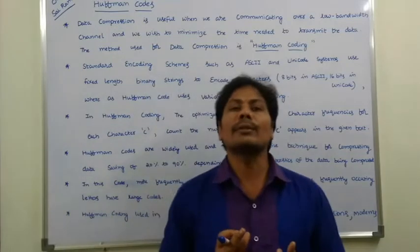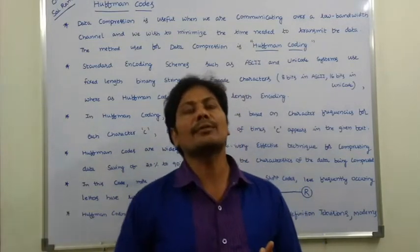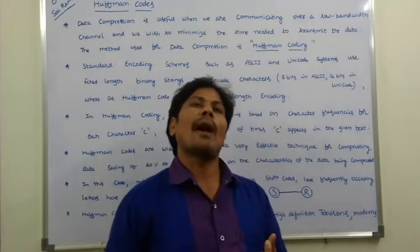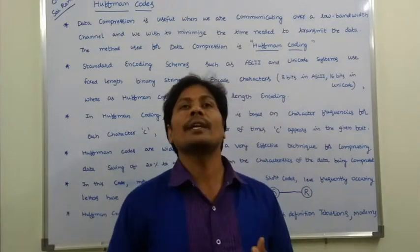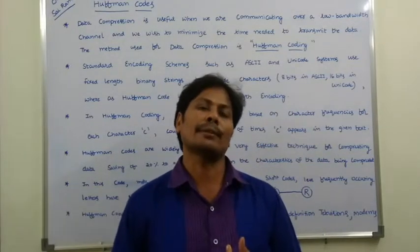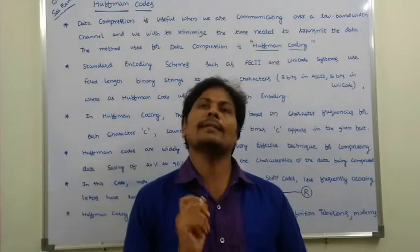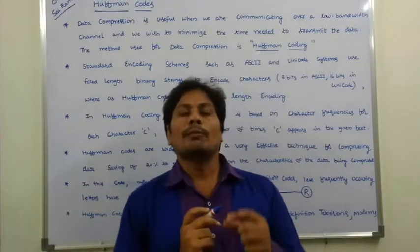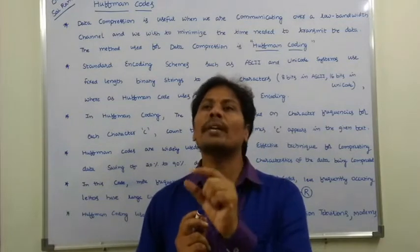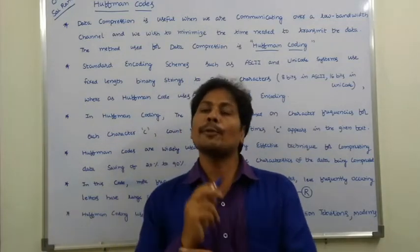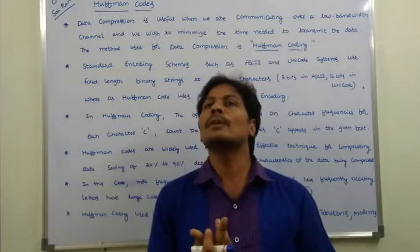Standard encoding schemes include ASCII coding and Unicode. These are fixed-length schemes — ASCII uses 8 bits and Unicode uses 16 bits. Huffman coding, on the other hand, uses a variable-length encoding scheme. In Huffman coding, an optimization technique is used based on character frequency — that is, how many times each character appears in the given text or data. Based on that, we apply Huffman coding to encode the given text into a compressed form.